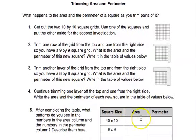So here you first write your area of your 10 by 10, then your 9 by 9, and then it says trim another layer of the grid from the top and from the right side so we have an 8 by 8 square grid.